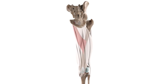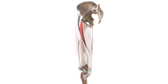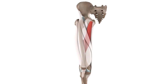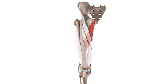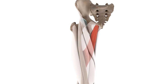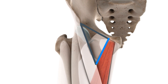The medial border of the adductor longus muscle also forms the medial boundary of the femoral triangle, which gives passage to several major neurovascular structures of this area, namely the femoral artery, vein, and nerve.